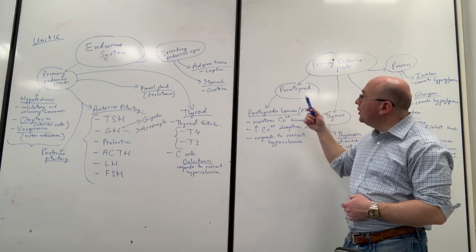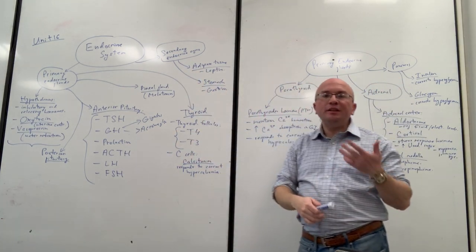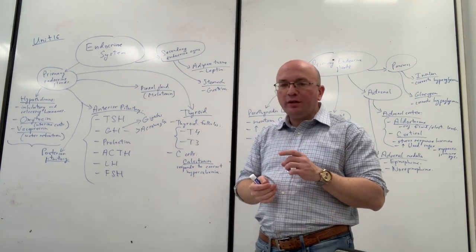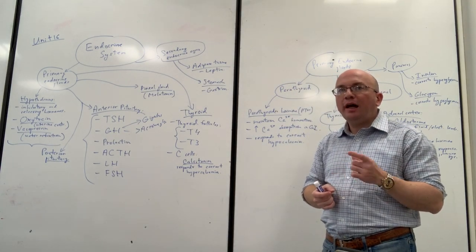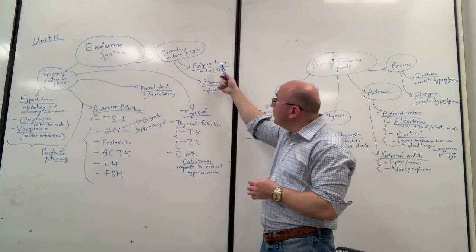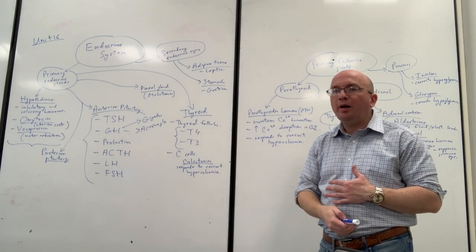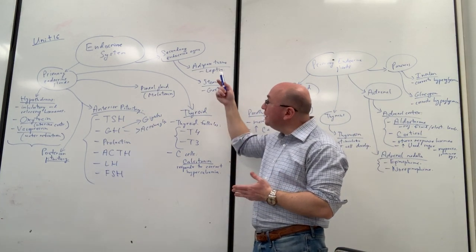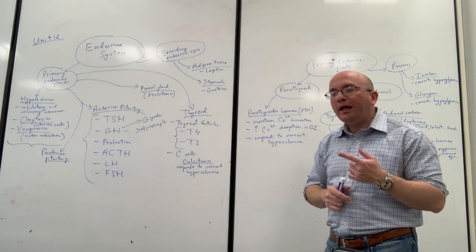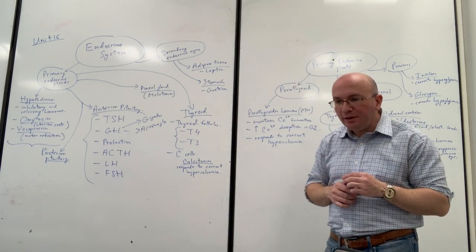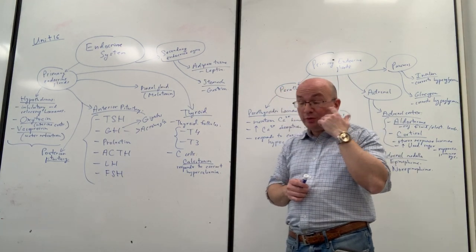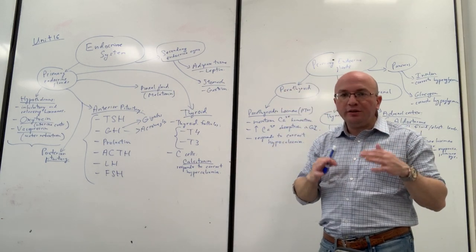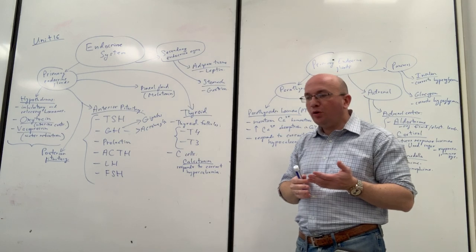Before continuing with the remaining primary endocrine structures, let's talk about secondary organs — regular organs we've already learned about that can also produce hormones with endocrine effects. Two examples are adipose tissue and the stomach. Fat tissue isn't just silently accumulating energy — it's an endocrine-active organ that releases at least one known hormone called leptin. Leptin inhibits hunger as part of appetite control in the body, and through the hypothalamus and other brain regions, adipose tissue plays a role in regulating appetite for normal body function.